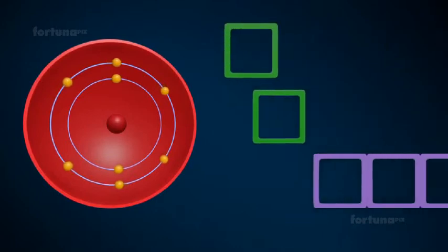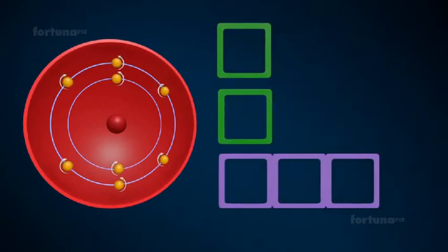According to the Aufbau principle, the first electrons will occupy the 1s orbital. Because the 1s orbital can host two electrons, it follows Pauli's principle and accommodates two electrons spinning in opposite directions.